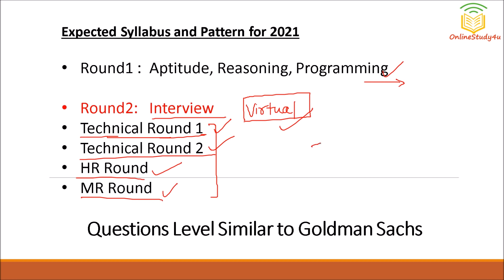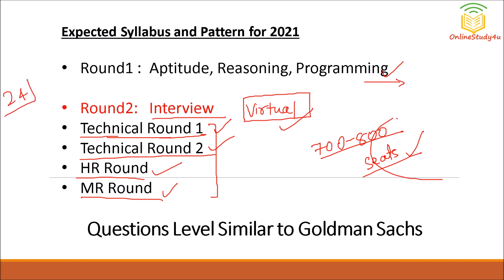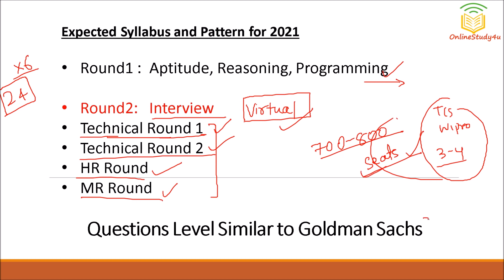Regarding job vacancies, there are approximately 700 to 800 seats available at PayPal. You need to be very careful, and you can judge the level from the package. For example, TCS and Wipro offer 3 to 4 lakhs, so their question levels are easy. When someone is offering 6 times that, the level of questions will naturally be much higher.